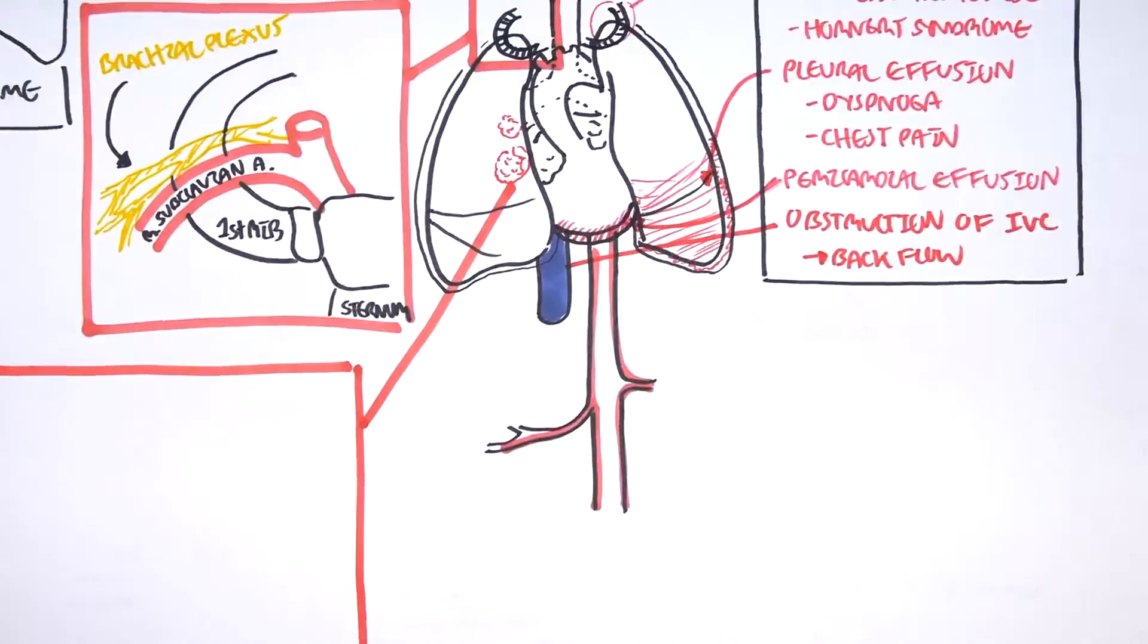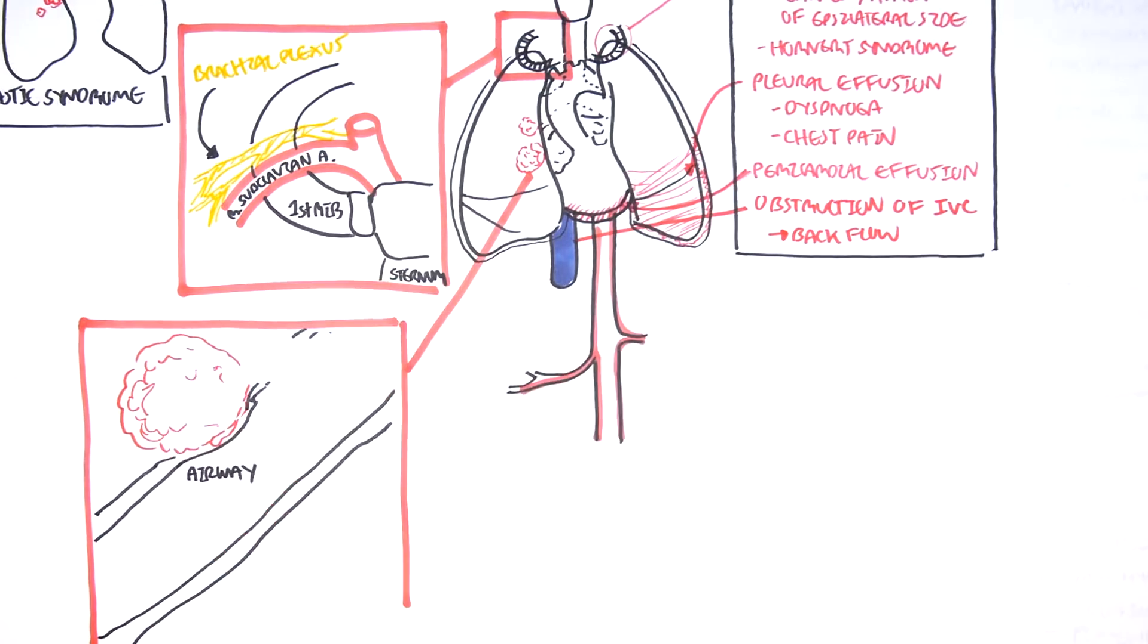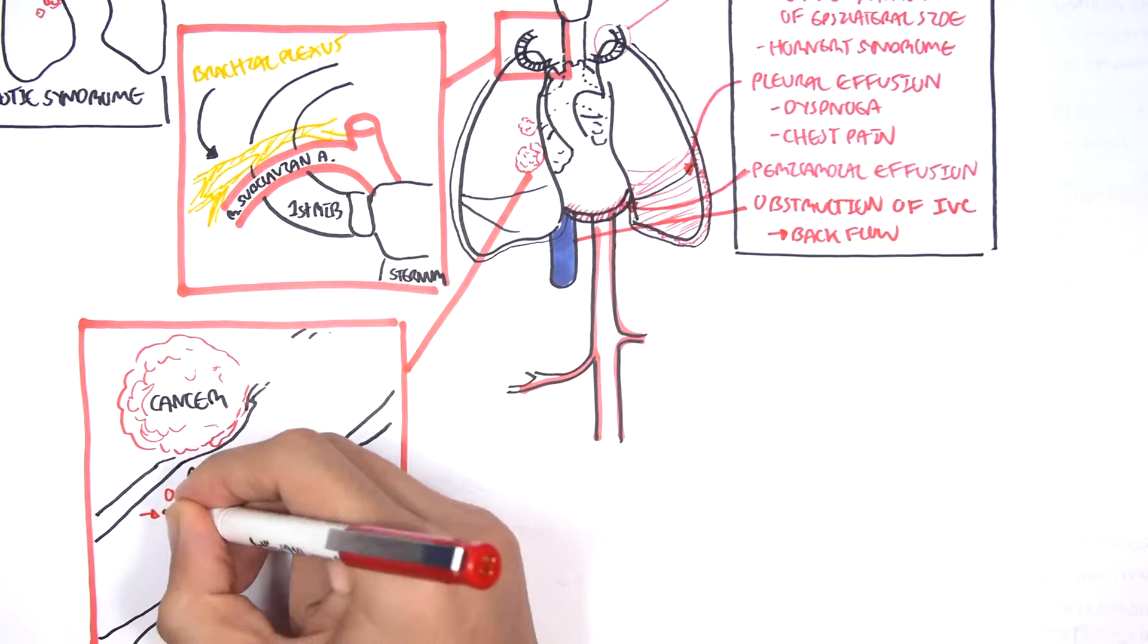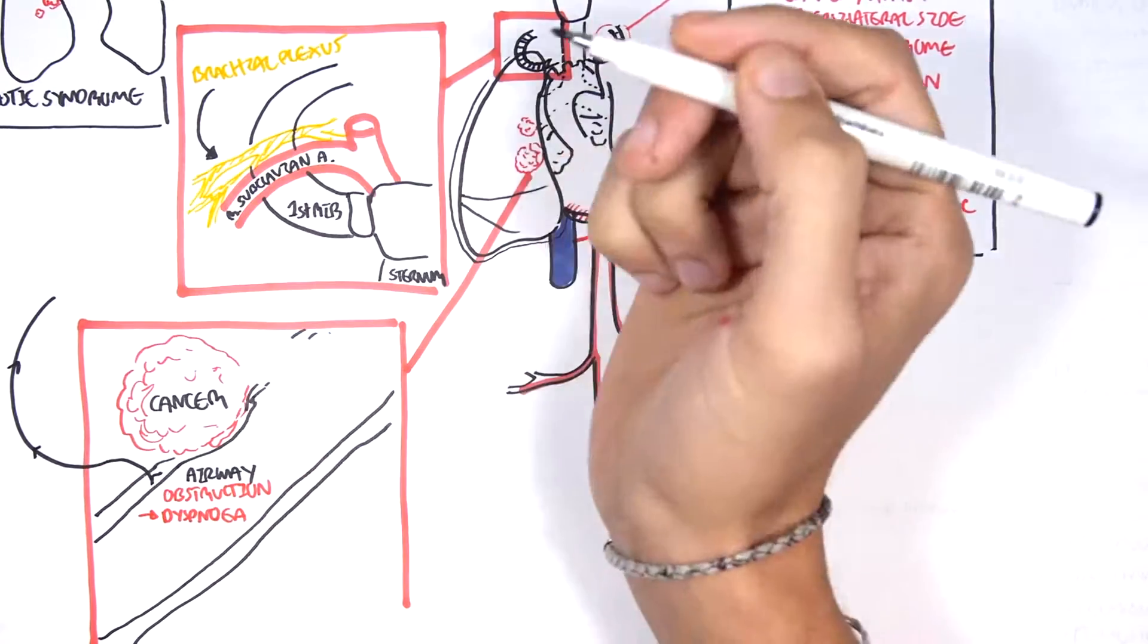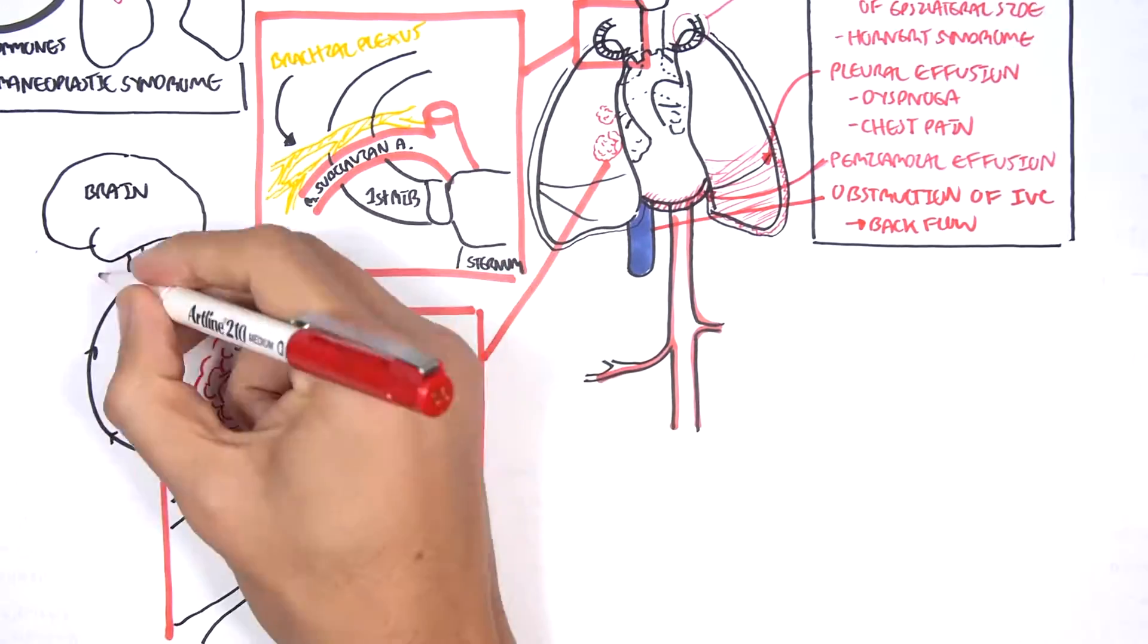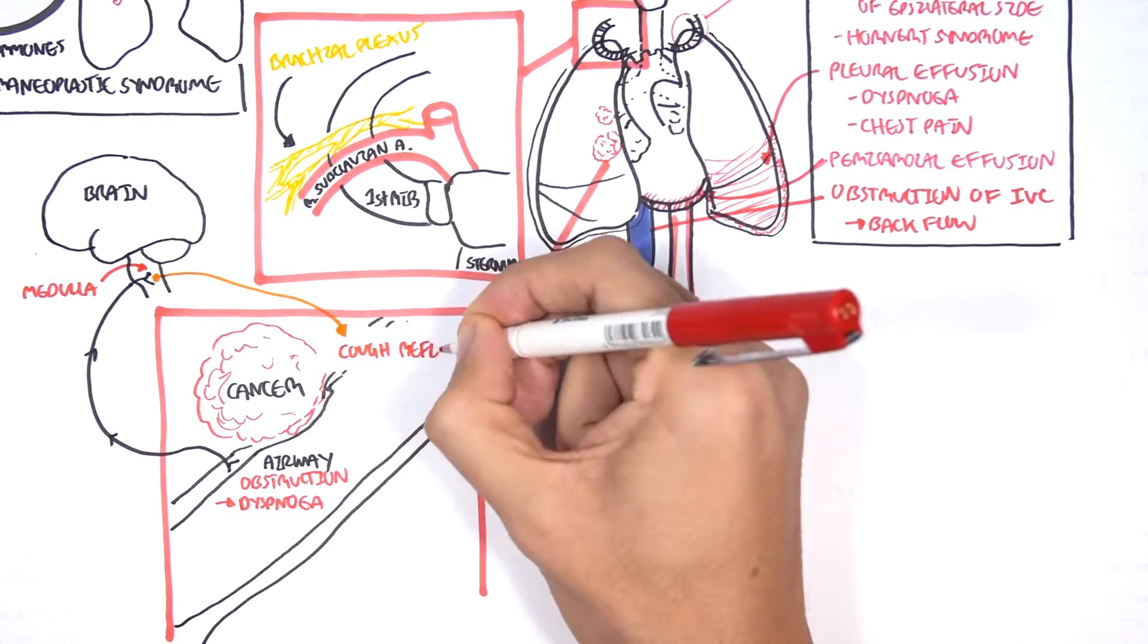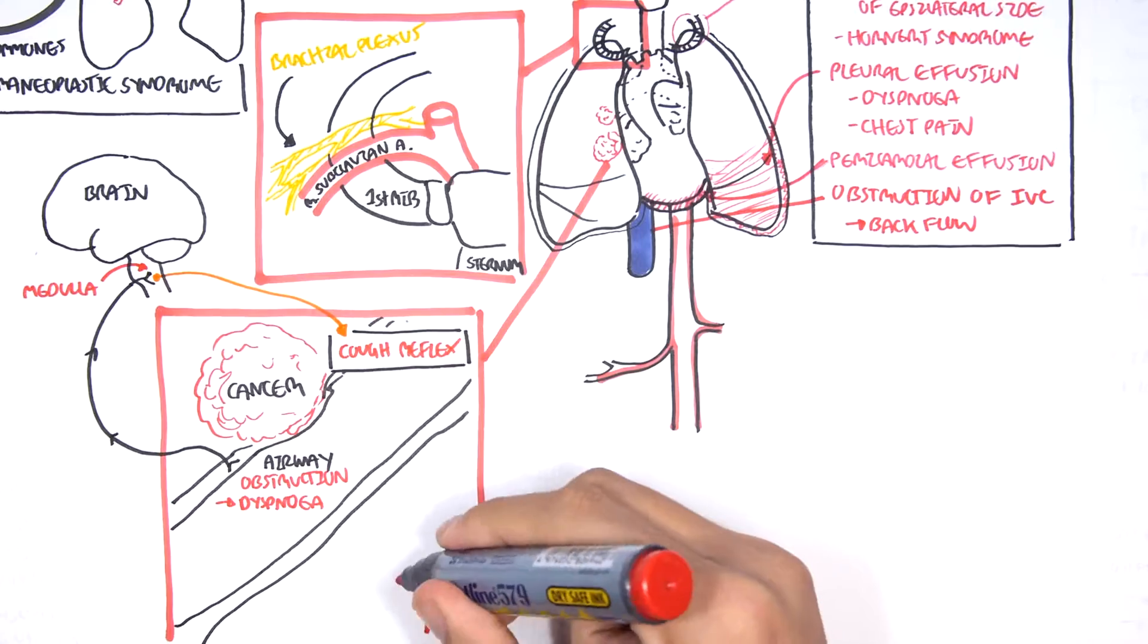Let us look at the airway involvement now. The airways of the lungs are the bronchi and the bronchioles before it terminates at the alveoli. Cancer can cause airway obstruction as it impedes air flow. Airway obstruction leads to dyspnea. When there is airway obstruction or irritation, this actually sends sensory information to the brain and triggers the cough reflex. That is why in presentation we have dyspnea and cough.